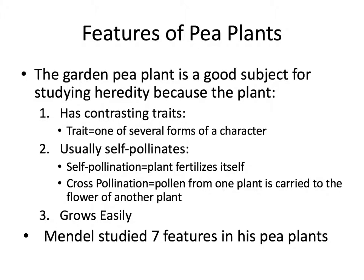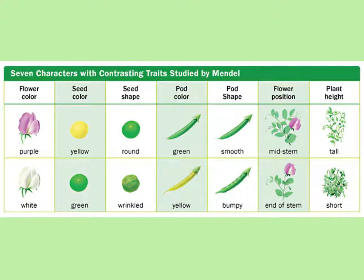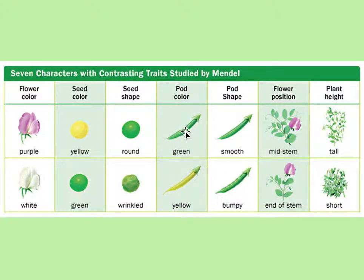Mendel specifically looked at seven different features in his pea plants. He looked at flower color — purple and white. He looked at seed color — yellow and green. He looked at seed shape — round and wrinkled. Pod color — green and yellow. Pod shape — smooth and bumpy. Flower position — mid-stem versus the end of the stem. And finally, he looked at tall plants versus short plants. These were all contrasting traits.